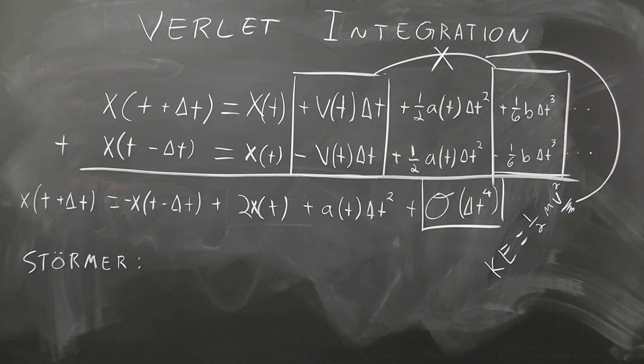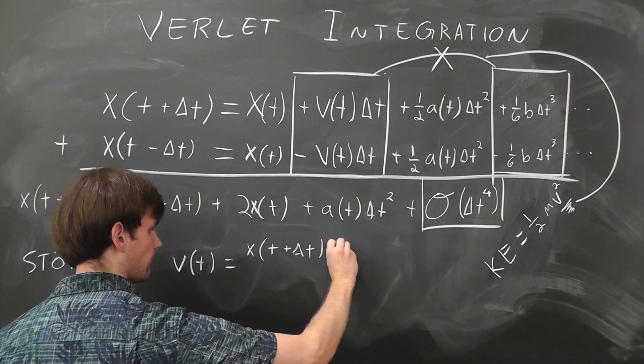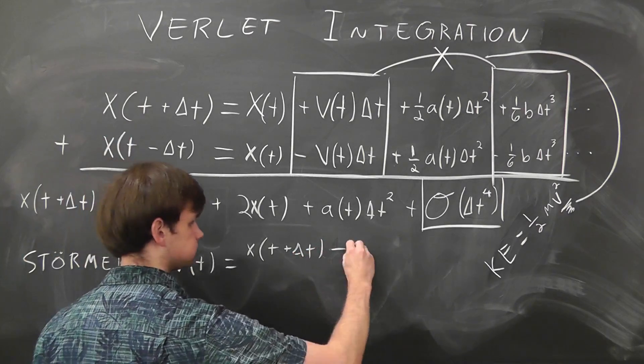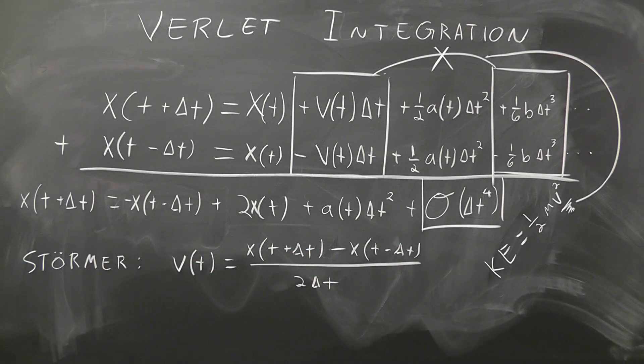He said that we could calculate the velocity of any object simply by taking its position one time step forward and its position one time step back, and dividing by two delta t. Which sounds great,